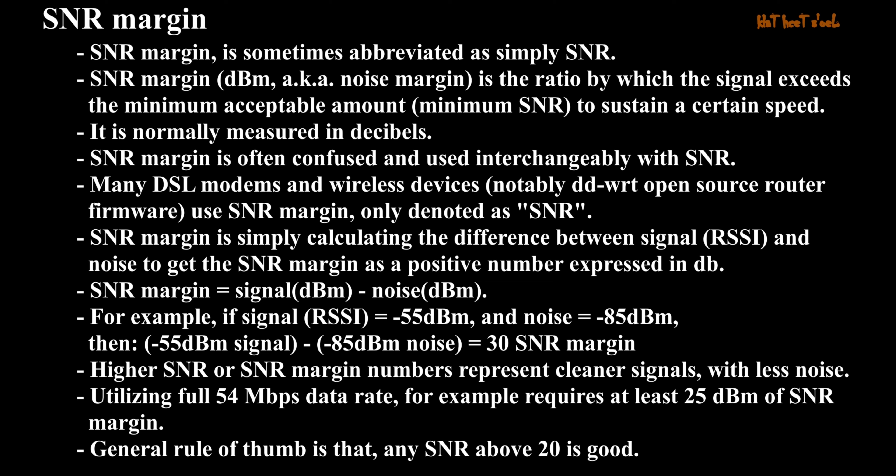SNR Margin is sometimes abbreviated as simply SNR. SNR Margin (dBm), also called noise margin, is the ratio by which the signal exceeds the minimum acceptable amount — minimum SNR — to sustain a certain speed. It is normally measured in decibels. SNR Margin is often confused and used interchangeably with SNR. Many DSL modems and wireless devices, notably DD-WRT open-source router firmware, use SNR Margin only denoted as SNR. SNR Margin is simply the difference between signal (RSSI) and noise, expressed as a positive number in dB: SNR Margin = Signal (dBm) minus Noise (dBm).